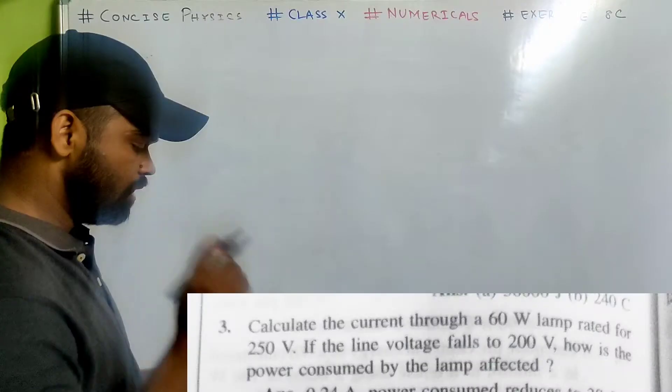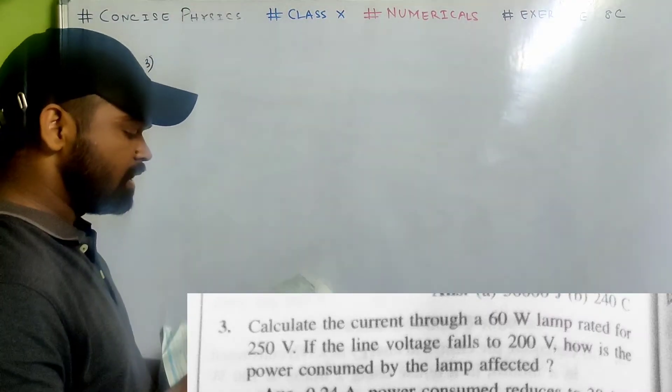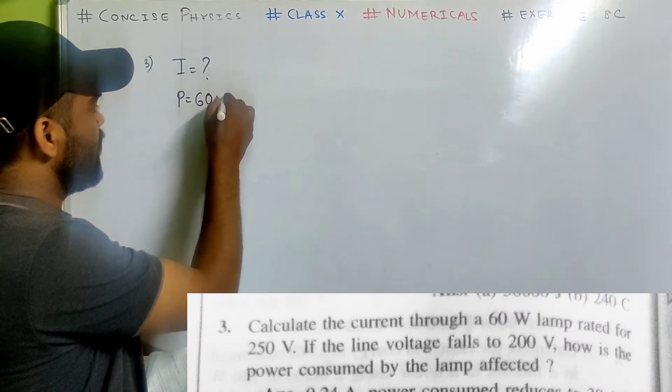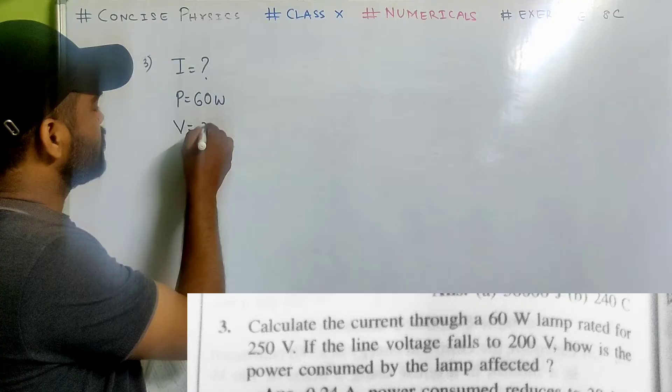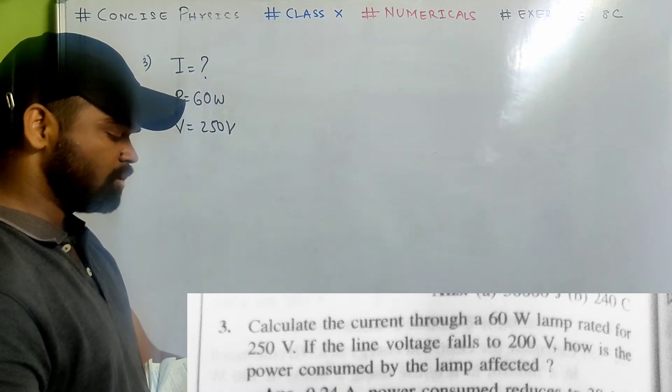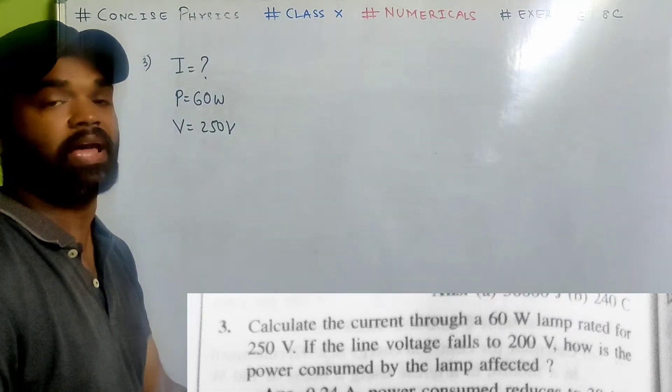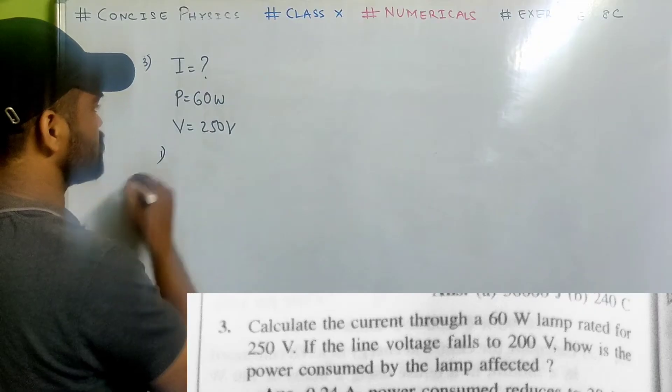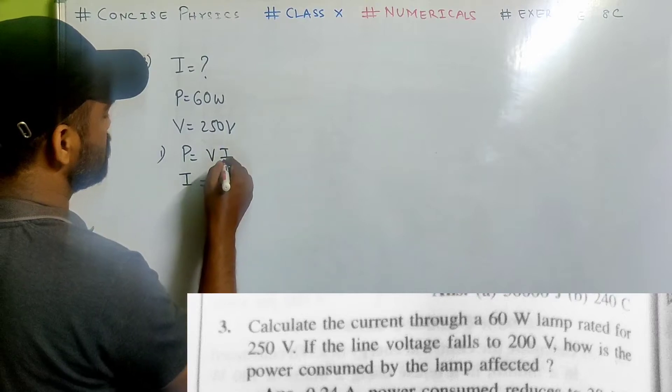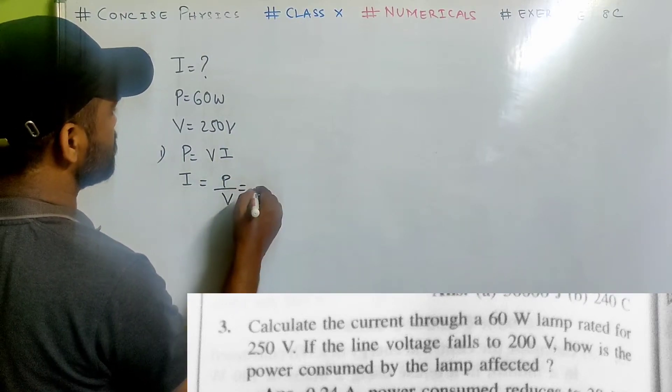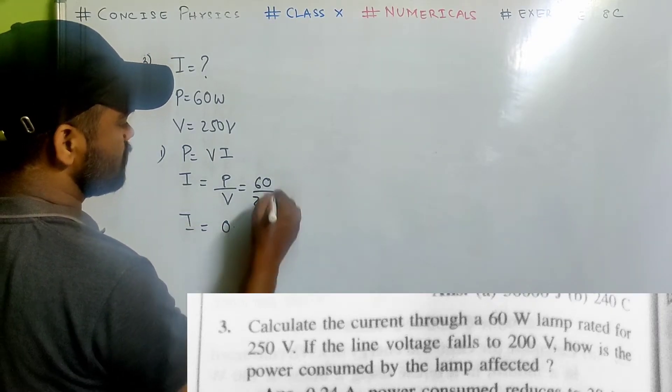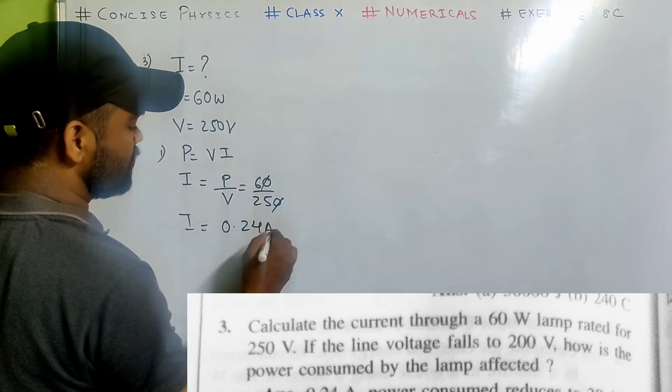We'll do number 3 now. Calculate the current through a 60 watt lamp rated for 250 volt. If the line voltage falls to 200 volt how is the power consumed of the lamp affected? First of all we'll do the first question. Power equals to v i. So i equals to p by v that is 60 by 250 that is 0.24 ampere.